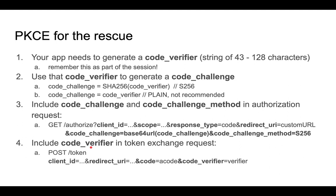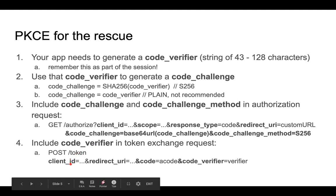The token exchange request will look like this: it will include the client ID, the redirect URI, the grant type, the code that was received, but also the code verifier. The server has received this code verifier and will use it to verify that it can issue the access token to this client.